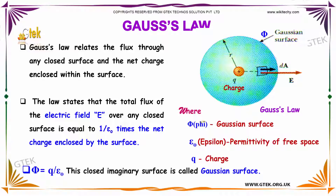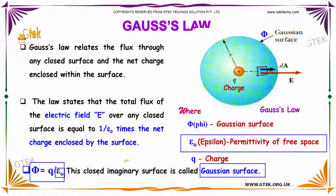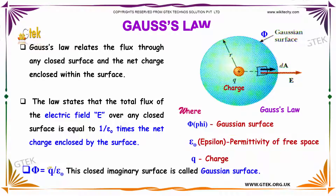This can be written as the equation Phi equals q divided by epsilon-zero. This is a closed imaginary surface called the Gaussian surface. Here, epsilon-zero indicates the permittivity of free space, and q indicates the charge.